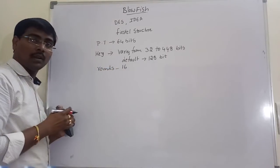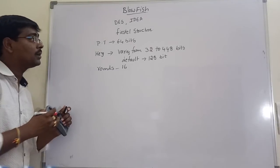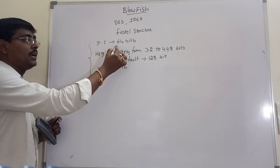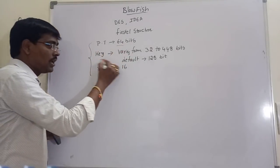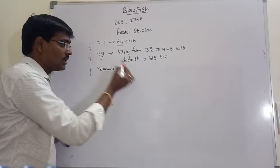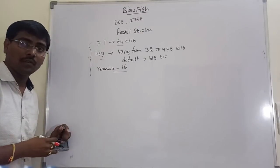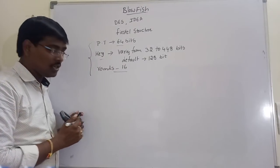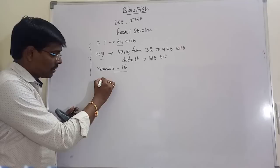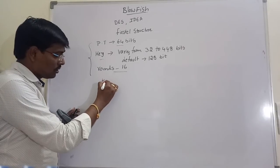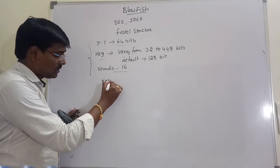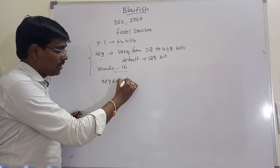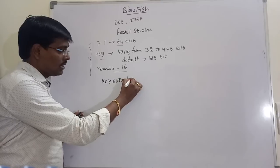The number of rounds performed are 16. This is the basic information: plain text size, key size, and the number of rounds. Now, in the Blowfish Algorithm, the main point is how the key is expanded.